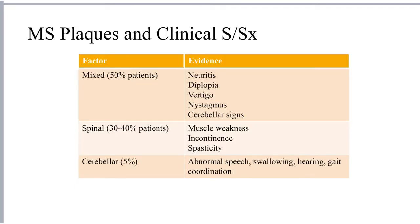The clinical signs and symptoms of multiple sclerosis directly correlate with the location in the brain of the plaques or lesions that have occurred. The majority of patients with MS present with what is known as a mixed presentation — about 50% of patients have this type of presentation — and that means there are lesions both in the central nervous system, in the brain, as well as in the spinal cord.